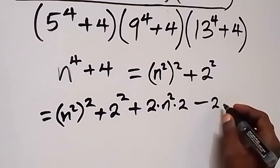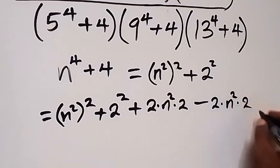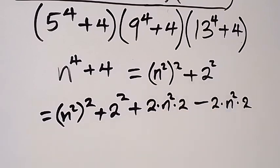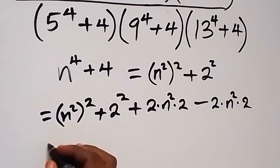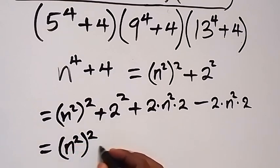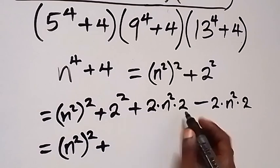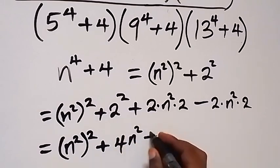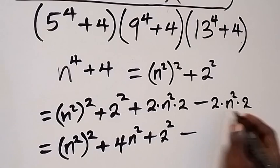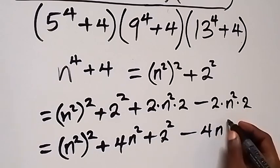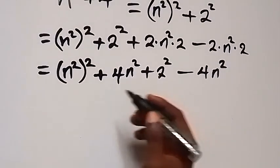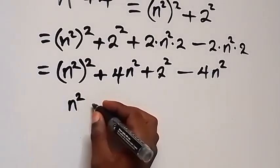We added a number and subtract the same number — minus 2 times n² times 2 — so it gives us back the original expression. Now in the next step we have n² squared plus 2 times 2 is 4, that's 4n², then plus n² squared plus 2 squared, minus 4n². What we have here can be summarized simply as (n² + 2) squared.